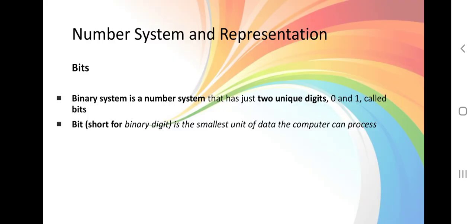Bits. Binary system is a number system that has two unique digits 0 and 1 called bits. Bit, short for binary digit, is the smallest unit of data the computer can process.